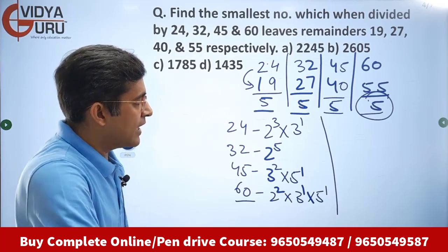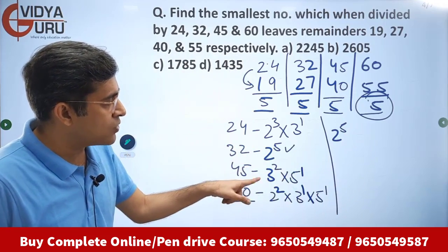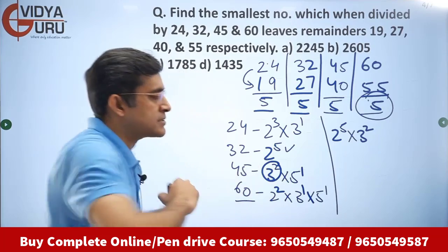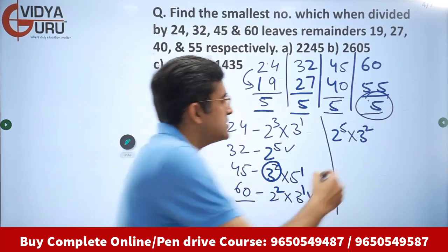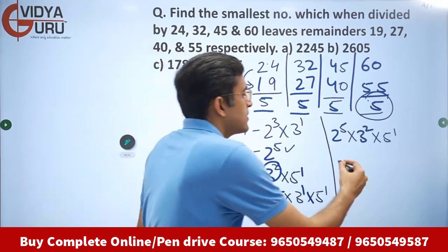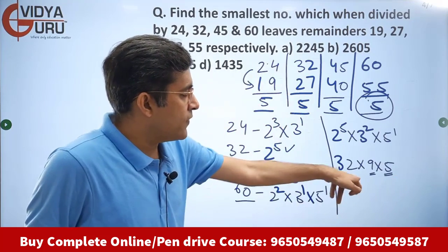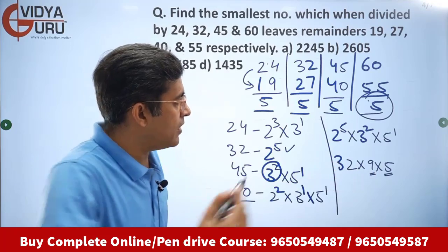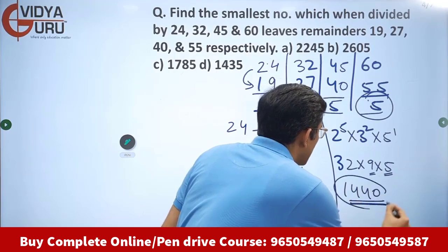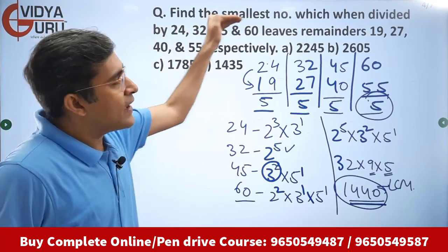Now choose the highest powers. The highest power of 2 is 2 to the power 5. The highest power of 3 is 3 squared. The highest power of 5 is 1. Now multiply them: 32 into 9 into 5. 9 fives are 45, and 45 into 32 = 1440. So the LCM of 24, 32, 45 and 60 is 1440.